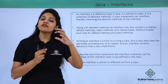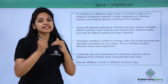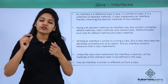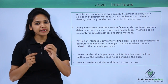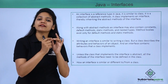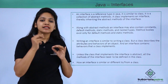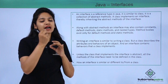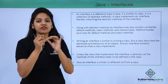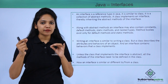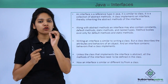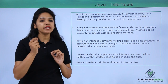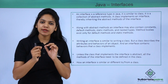An interface can also extend other interfaces. For example, if you have three interfaces A, B, and C, interface C can extend both A and B by writing: interface C extends A, B. When you want to extend a class, you use the keyword extends. But when you want a class to define the methods of an interface, you use the keyword implements — for example: class ClassName implements InterfaceName.